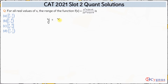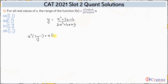Let's say f(x) = y, which is x² + 2x + 4 divided by 2x² + 4x + 9. One way of doing this is cross-multiplying and bringing all terms to the left-hand side, giving x²(2y − 1) + x(4y − 2) + (9y − 4) = 0. Since this holds for all real values of x, the discriminant should be greater than or equal to 0. However, this is a very lengthy method.